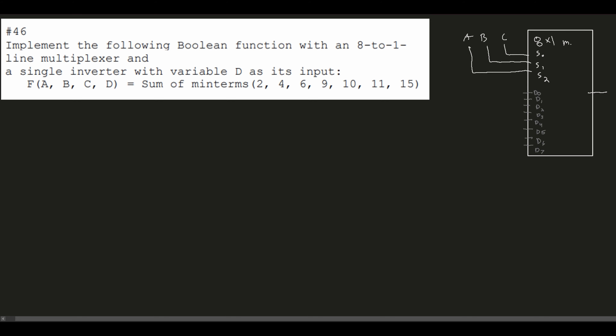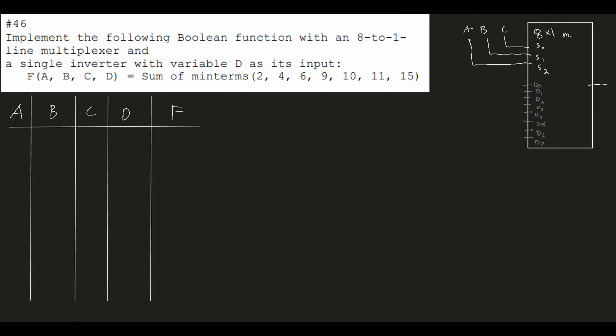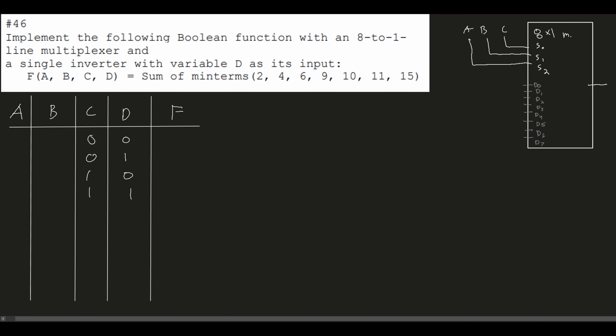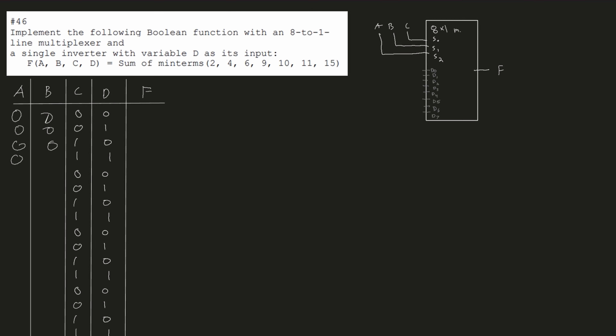Now we can look at our minterms by making a truth table to see how we're going to write the input. In our truth table we have A, B, C, D as our four inputs. Variable D has an inverter in front of it, but technically it's still an input — we'll deal with that specially, but for now we treat it as an input. We also have F for the output. We need all possible combinations of inputs, cycling through values for D, then C, then B, and A.